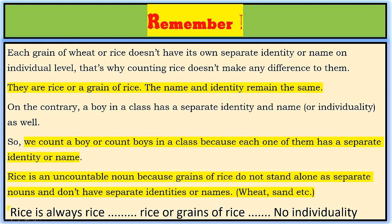On the contrary, a boy in a class has a separate identity, name, and individuality. So we count boys in a class because each one of them has a separate identity or name. Rice is an uncountable noun because grains of rice do not stand alone as separate nouns and don't have separate identities or names. The same is the case with other uncountable nouns like wheat, sand, etc. Rice is always rice — it doesn't have any individuality. That's why we don't include rice, wheat, sand, etc. in countable nouns and treat them as uncountable nouns.